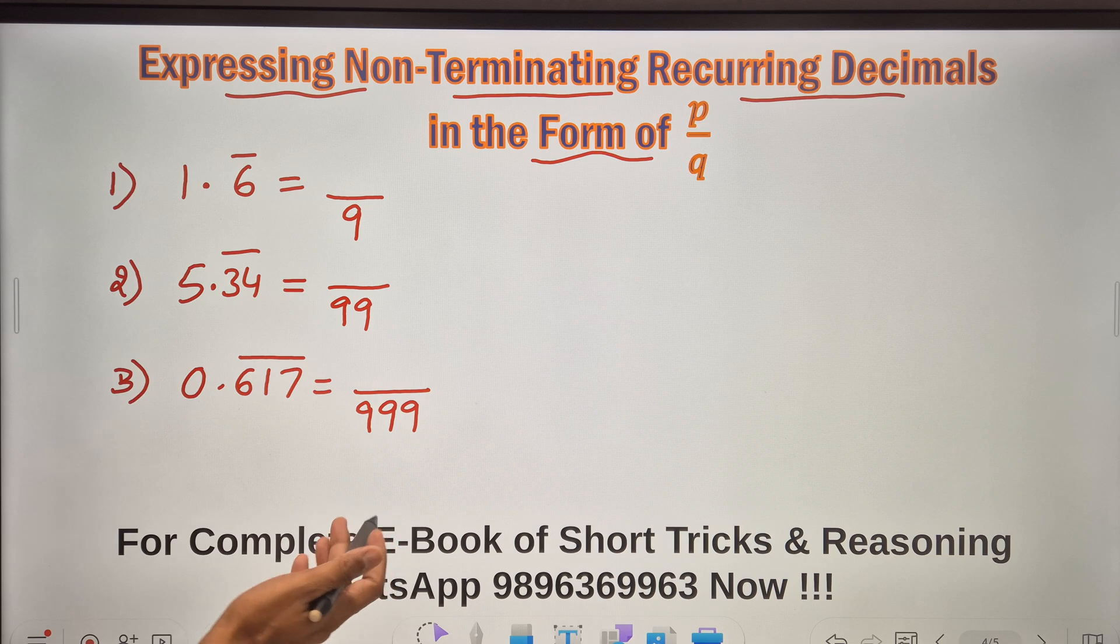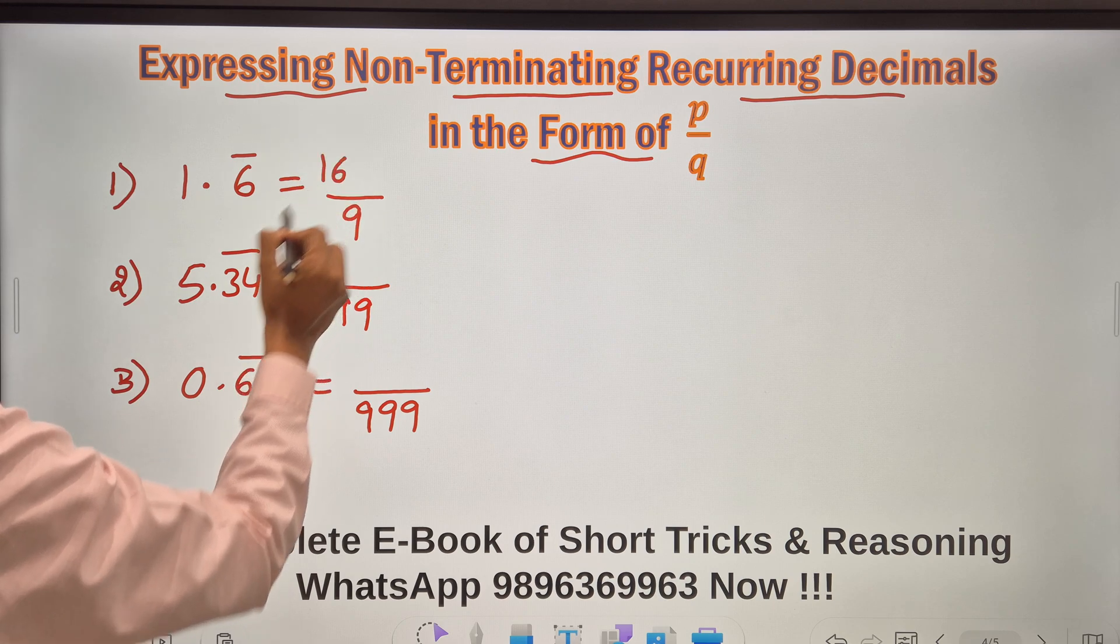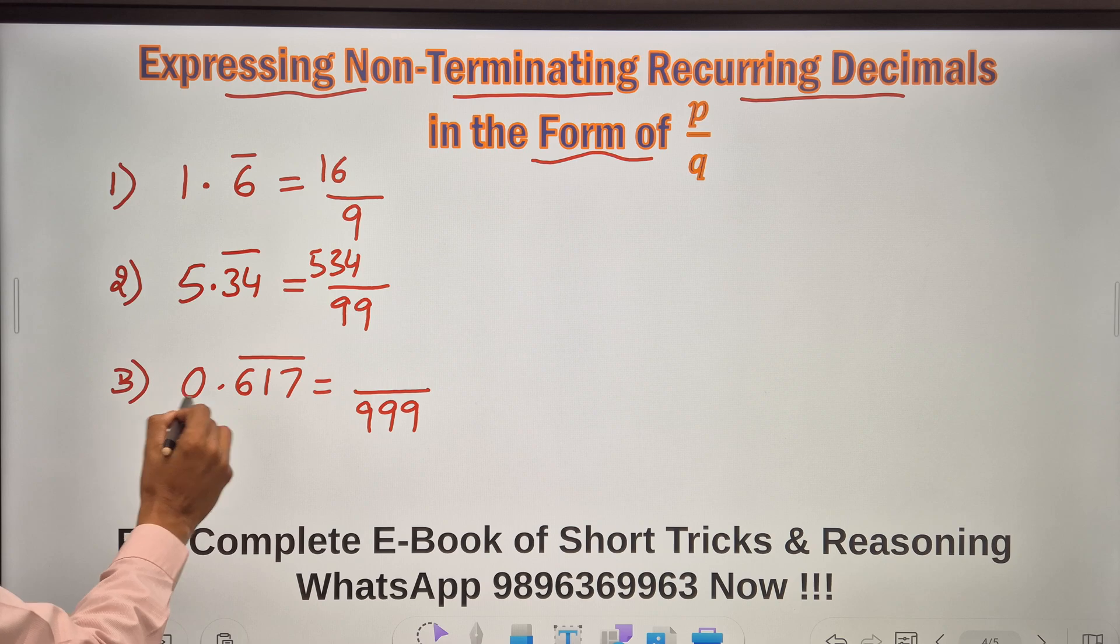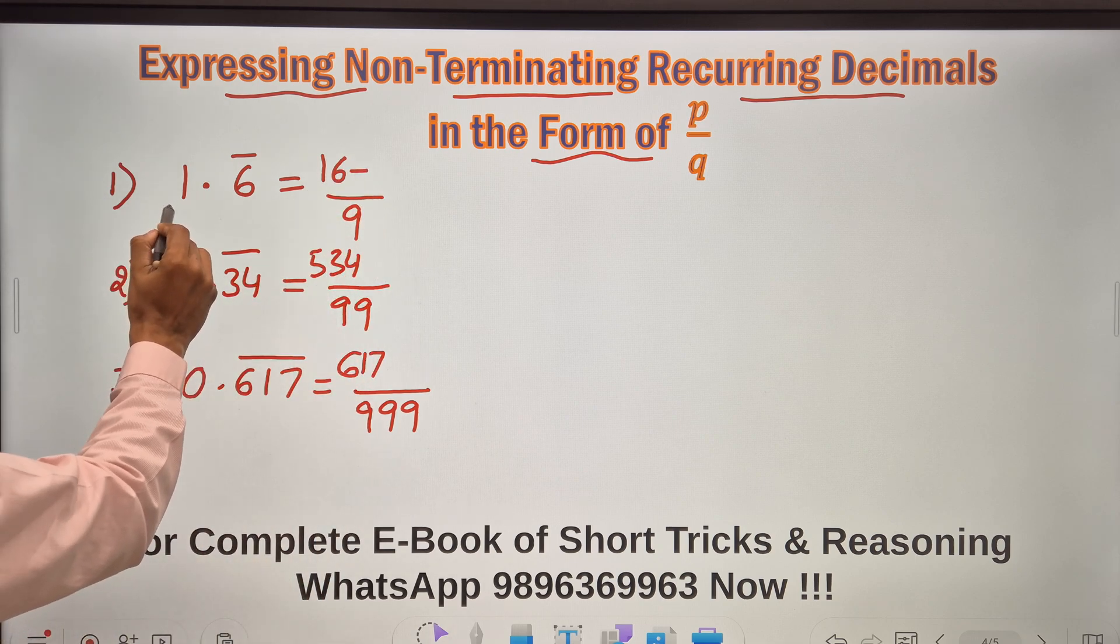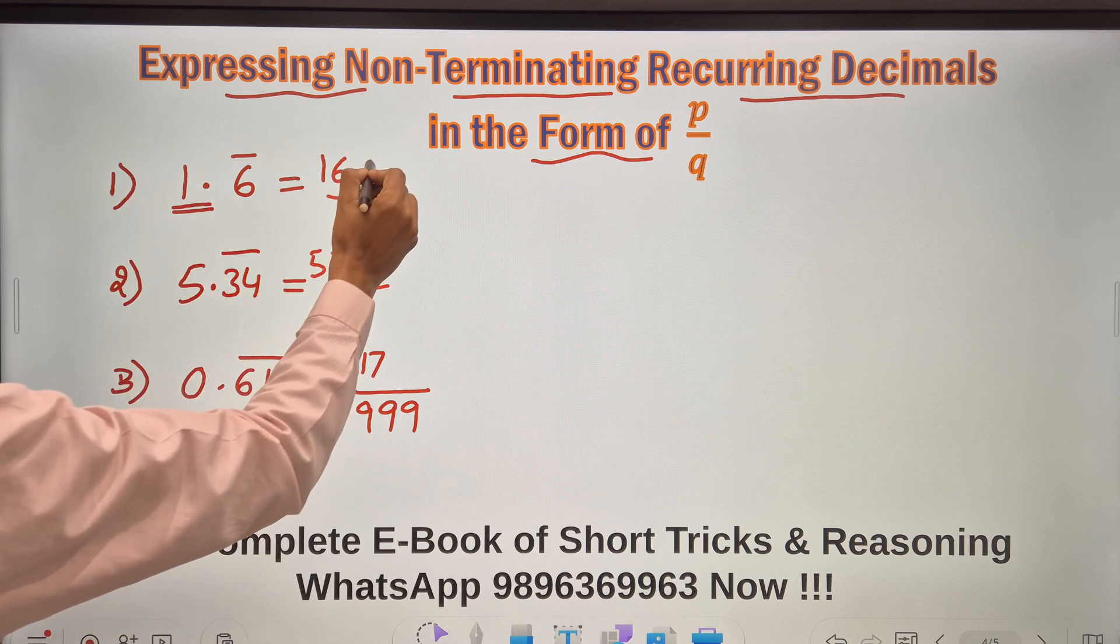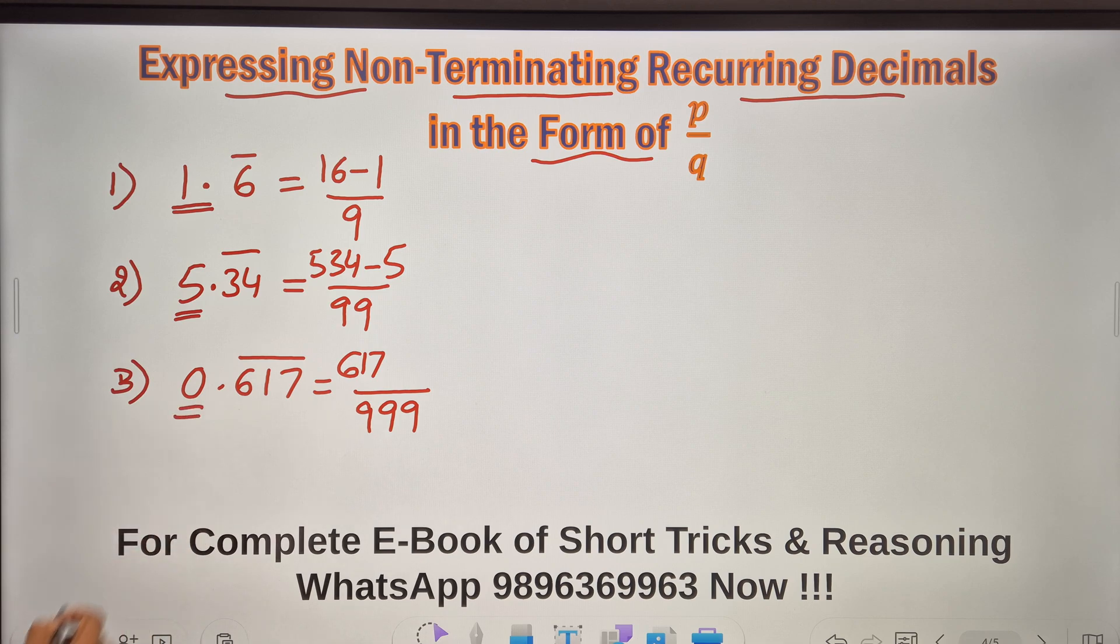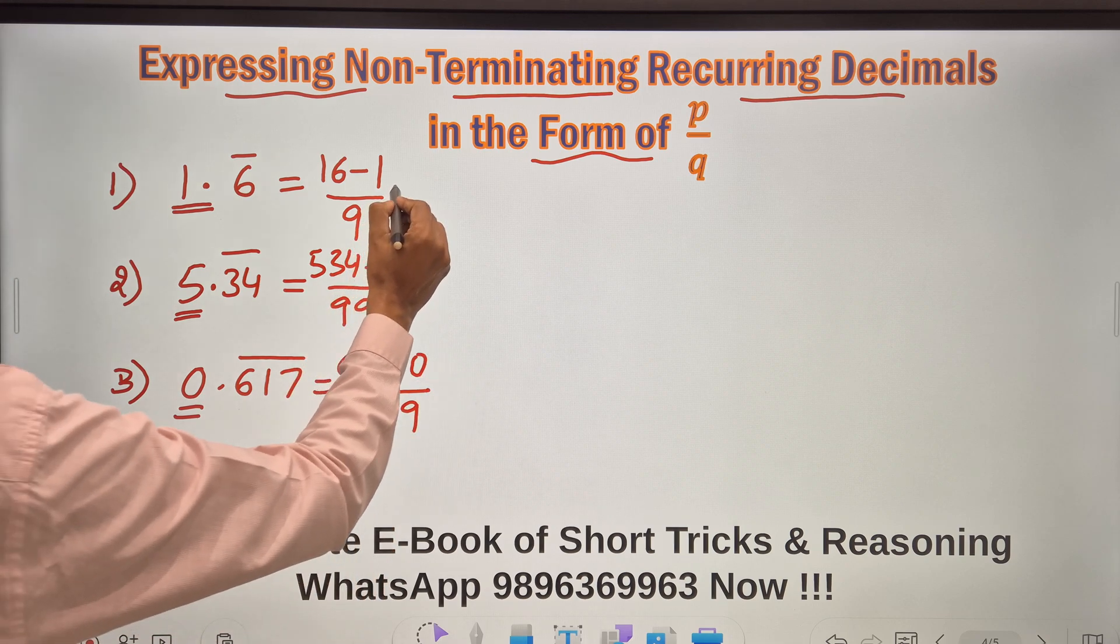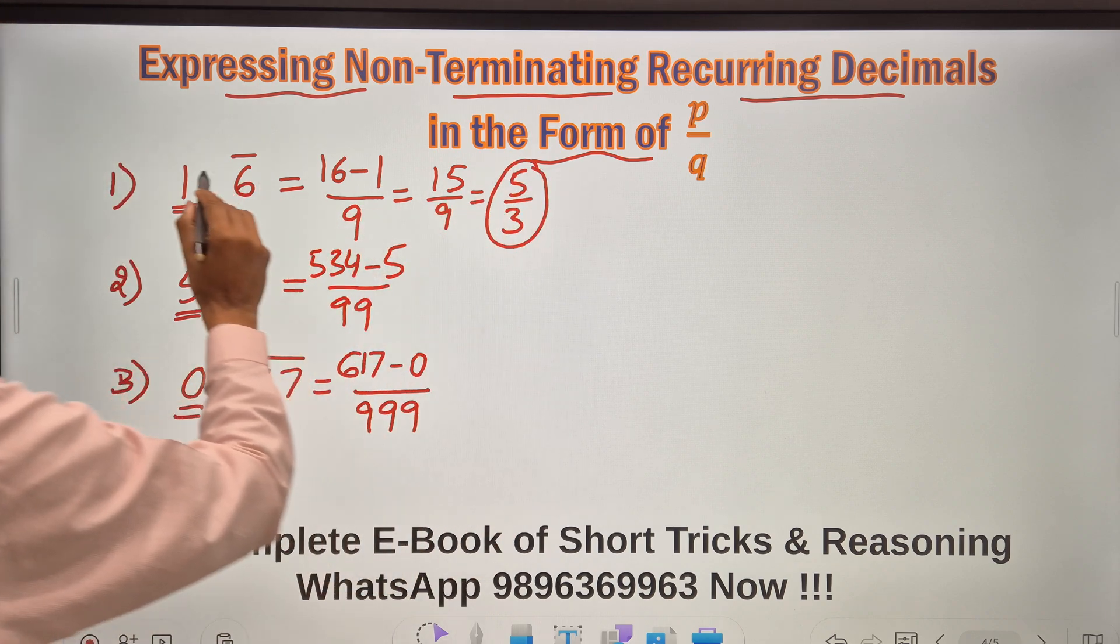Now after that it is pretty easy. Just forget the decimal and the bar. You get 16 minus 1. Here you get 534 minus 5. Here you get 617 minus 0. What you have to do in addition to that is subtract whichever number doesn't contain the bar. So here the 1 doesn't contain the bar, so this 1 will be subtracted. Here 5 doesn't contain the bar, so 5 will be subtracted. And here there is nothing that contains the bar, it's practically 0, so you can write 0 also. And this gives you 15 upon 9, which is 5 upon 3 as the answer for this question.